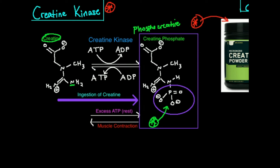So how does it work? When we're at rest, we move towards the right here because this is an equilibrium reaction. When we're not exercising, we're going to have a lot of ATP floating around because muscle cells aren't fully active at rest — they're minimally active. So we take that ATP and store the phosphate on creatine to make creatine phosphate, producing ADP. At rest, you should have the highest concentration of creatine phosphate.